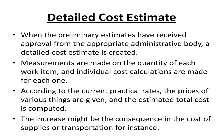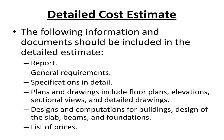Detailed cost estimate: When the preliminary estimates have received approval from the appropriate administrative body, a detailed cost estimate is created. Measurements are made on the quantity of each work item, and individual cost calculations are made for each one according to the current practical rates. The prices of various items are given and the estimated total cost is computed. The increase might be the consequence of the cost of supplies or transportation. The detailed estimate should include: a report, general requirements, specifications in detail, plans and drawings including floor plans, elevations, sectional views and detailed drawings, designs and computations for buildings such as design of the slab, beams, and foundations, and a list of prices.